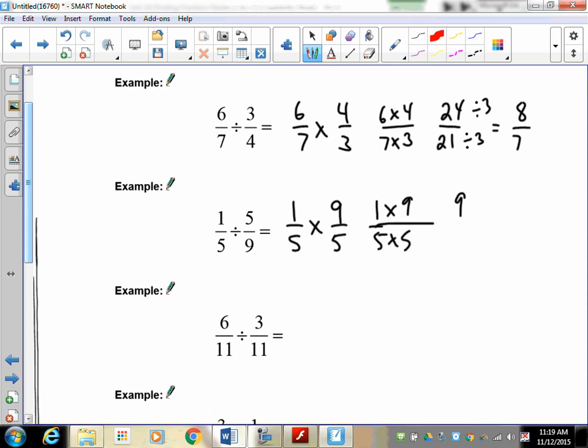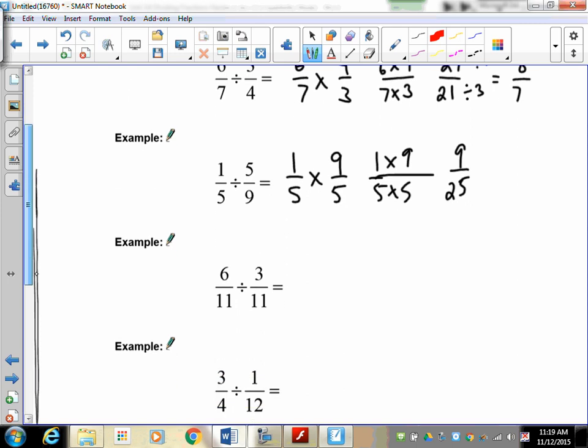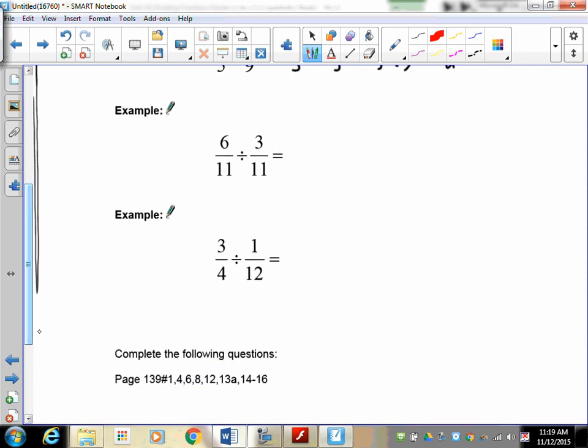Six over eleven divided by three over eleven. Keep the first one the same, make the second one its reciprocal. Six times eleven over eleven times three gives us sixty six over thirty three which is equal to two.